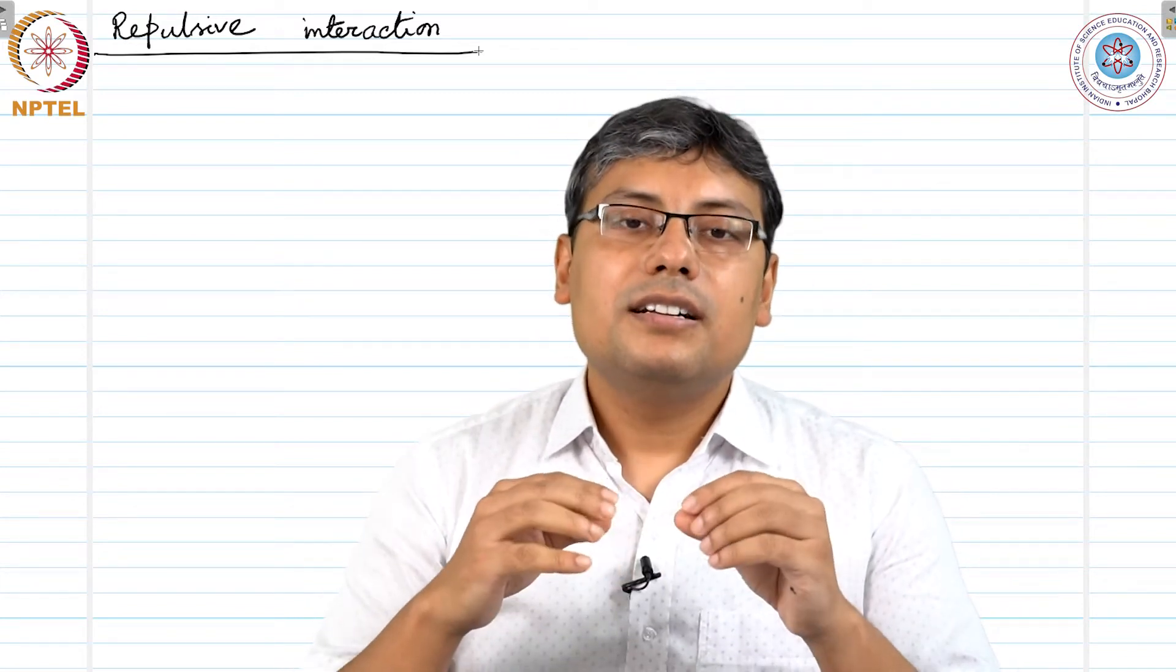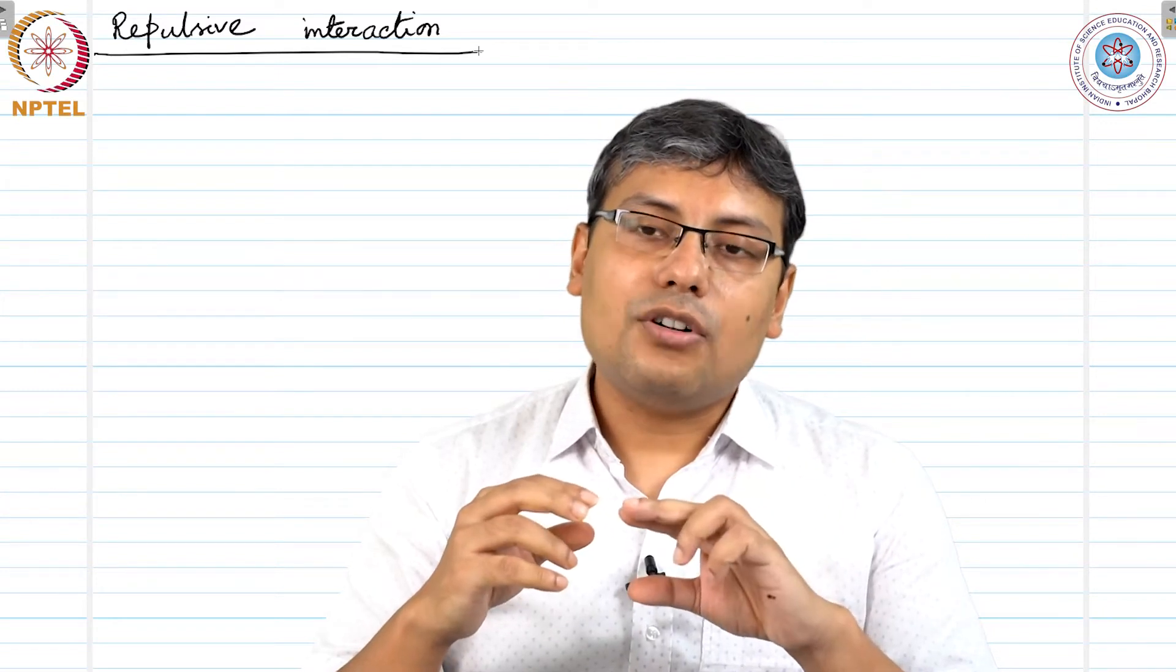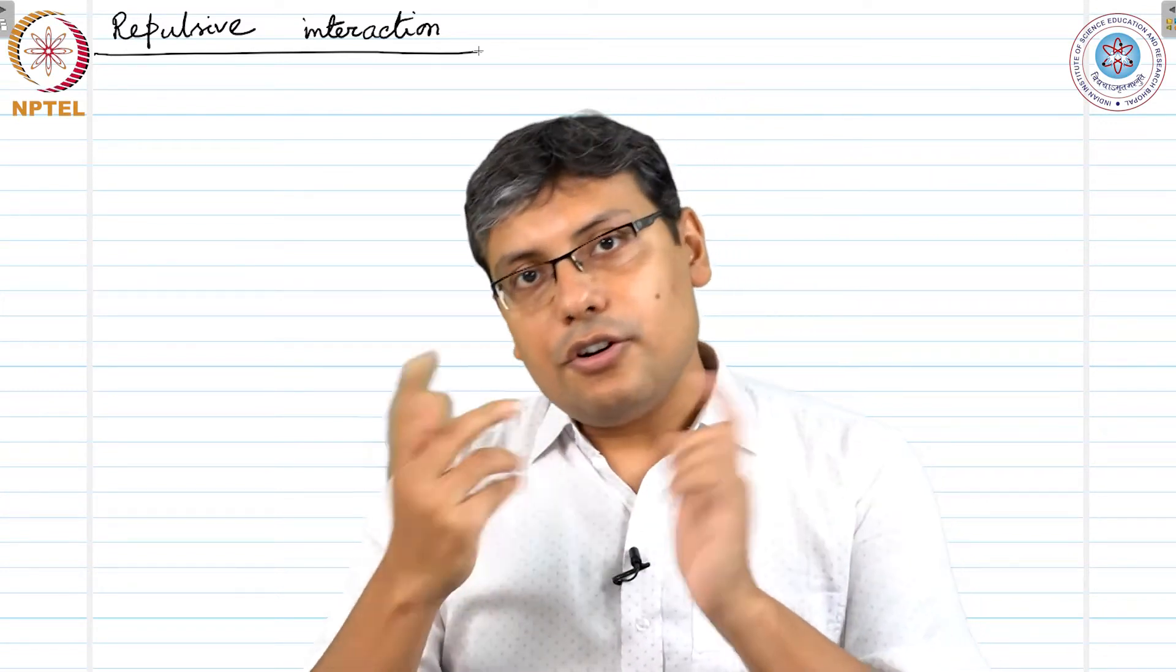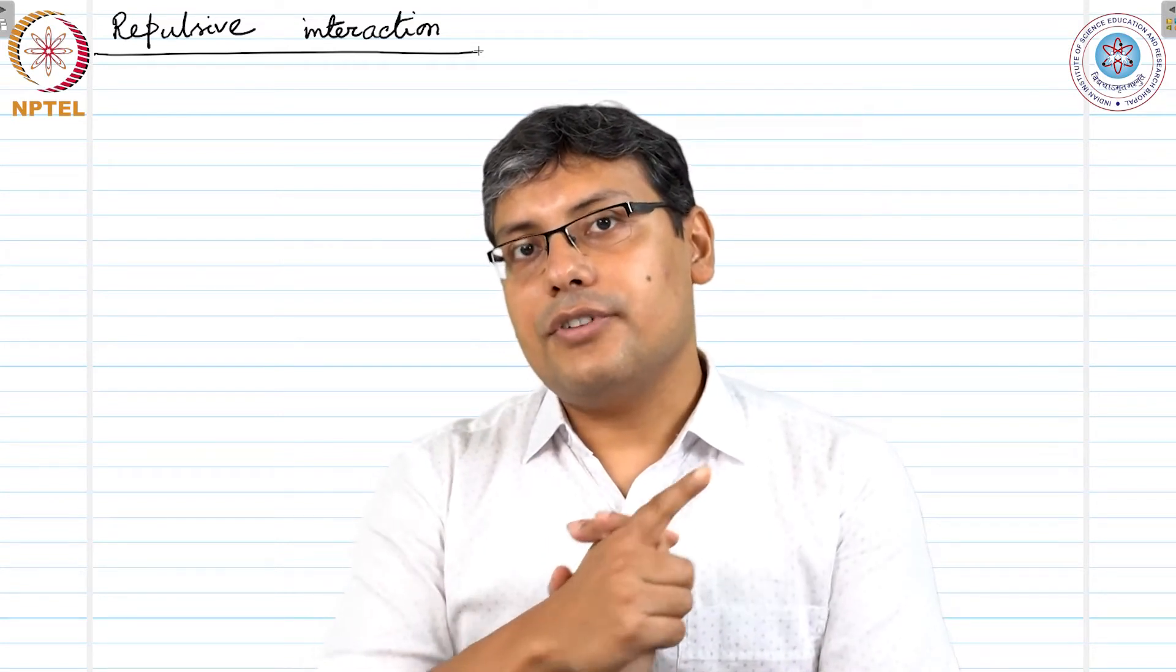Once they start overlapping, there is a tendency that the quantum states of one atom would be partly occupied by electrons from the other atom, and that is prohibited by Pauli exclusion principle. Pauli exclusion principle tells us that two electrons cannot have all their quantum numbers equal.